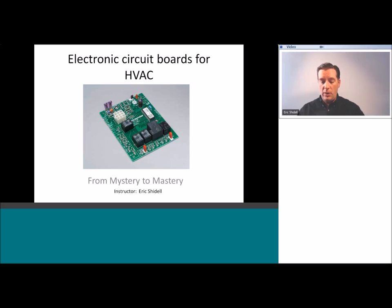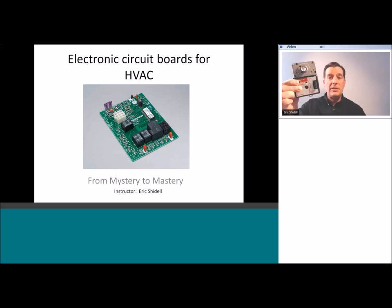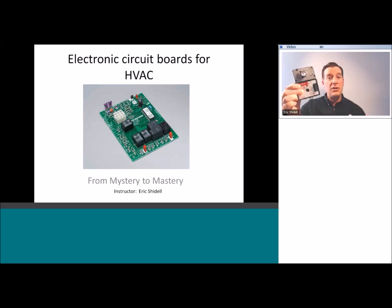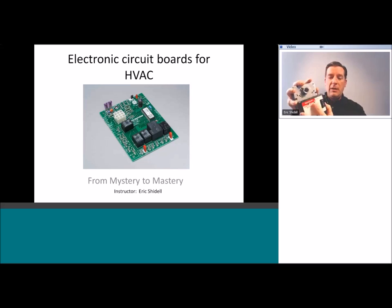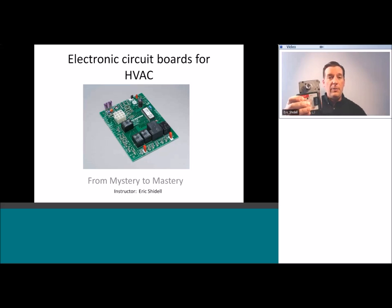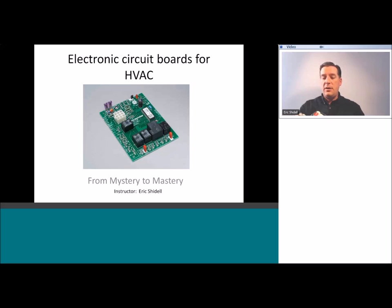Here I've got a Honeywell damper actuator. The job of this little fellow is multifold, and this is one of the keys to understanding how to troubleshoot things with electronic circuit boards. This thing has an electronic circuit board mounted inside of it that operates the whole thing. Its job is to position the damper in the correct location upon demand and provide feedback telling what position the damper is in. There's lots of sophistication in this device, dating back to circa 2007.